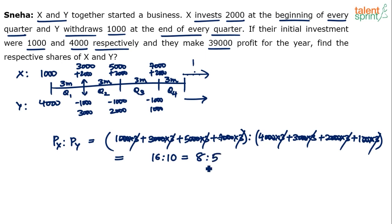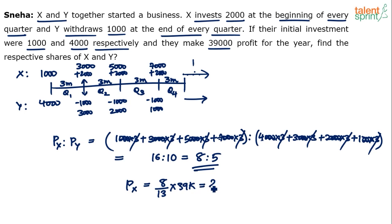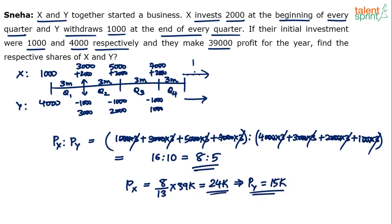So 1 + 3 + 5 + 7 = 16, and 4 + 3 + 2 + 1 = 10. The ratio is 16 : 10, which simplifies to 8 : 5. Profit of X = 8/13 × 39,000 = 24,000 rupees. Profit of Y = 39,000 − 24,000 = 15,000 rupees. So the individual shares are 24,000 and 15,000 respectively.